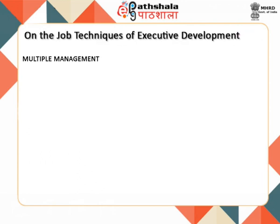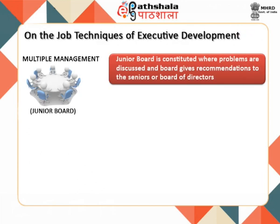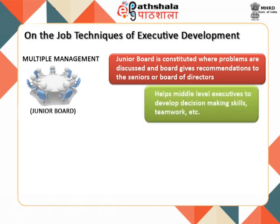Multiple management system: In this method, a junior board is constituted for the purpose of training where problems are discussed and the board gives recommendations to the seniors or board of directors. This method is also called the junior board method, and it helps middle-level executives to develop decision-making skills, teamwork, and enables managers to see things from the organization's perspective rather than the individual's.